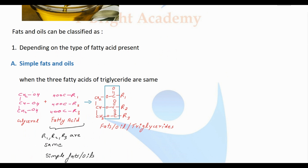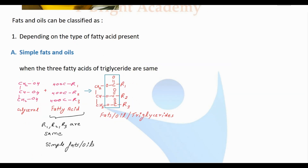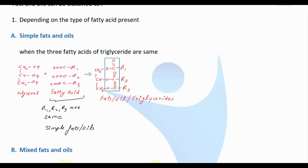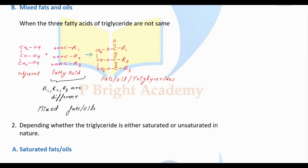In classification, fats and oils are classified into simple fats and oils and mixed fats and oils. In simple fats and oils, glycerol reacts with three molecules of fatty acid where R1, R2, and R3 are the same — that is called simple fats and oils. In mixed fats and oils, R1, R2, and R3 are different — that is called mixed fats and oils.